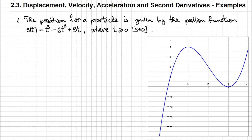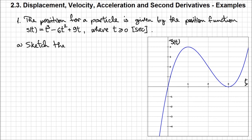The graph for this position function s(t) is already given, and using any graphing calculator you can easily determine the graph of this cubic function. Note that the graphing calculator used here shows x and y instead of t and s(t) — those are just the common letters for independent and dependent variables. In our case, the independent variable is time and the dependent variable is position s(t). The first thing we need to determine is to sketch the graphs for the velocity and acceleration functions.